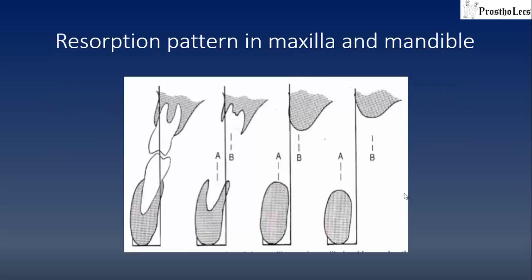You can see in this illustration that after tooth removal, considering a reference line, the ridge moves far away from this reference line. In the maxilla, it moves inward and upward — the bone level, which was first at a higher point, moves upward. Whereas in the case of the mandible, it moves outward and downward. You can see in the first image the bone is at one level, and in the last image after resorption, it is at a lower level.